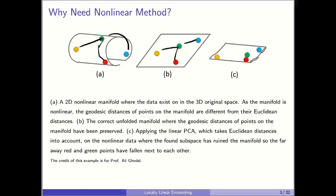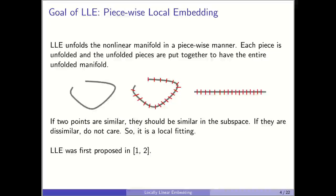So when we have nonlinear data, it's better to use a nonlinear method or transform the data. Local linear embedding is a nonlinear method itself — it doesn't transform data. It was proposed in 2000 in the same journal that Isomap was proposed.